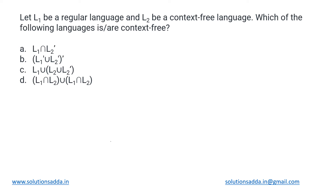This is a TOC question. We have two languages L1 and L2. L1 is regular and L2 is context-free. We have been given four languages in the options and we have to determine which of these languages will also be context-free. The first one is L1 intersection L2 bar — L2 complement. L1 is a regular language and L2 is a CFL, a context-free language.